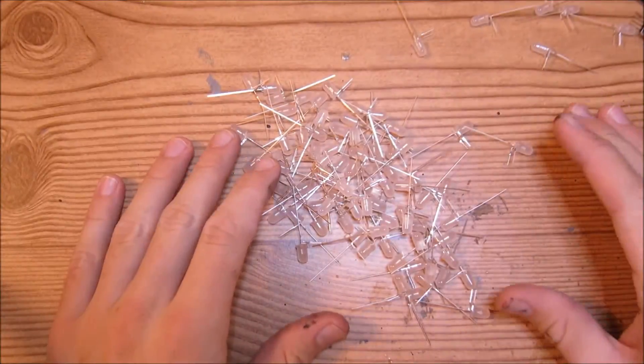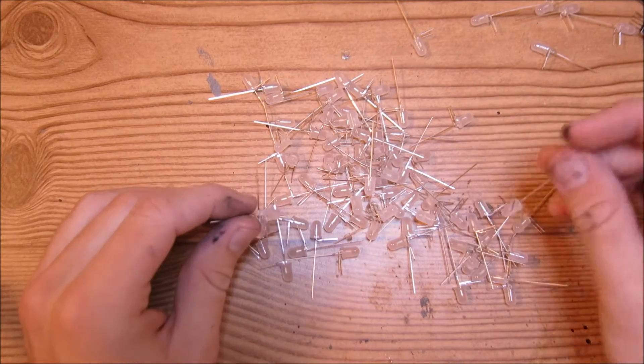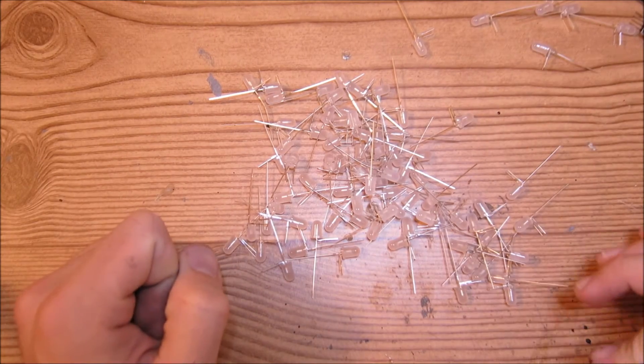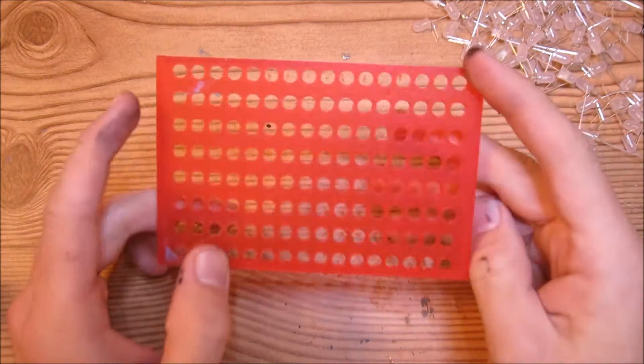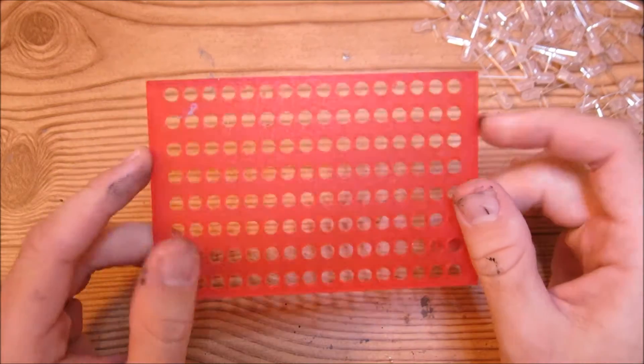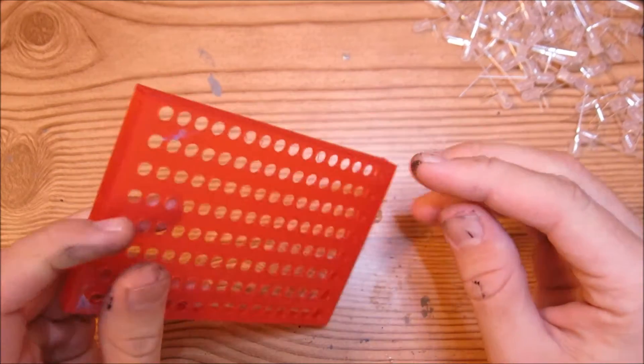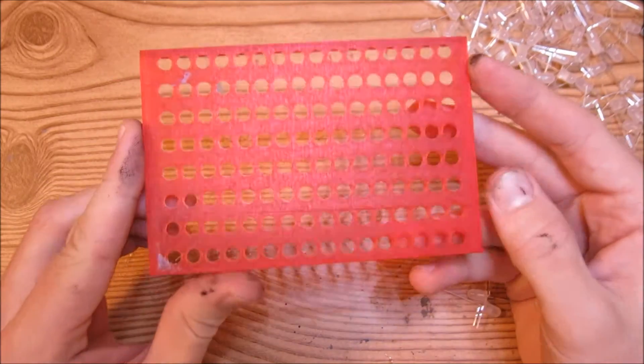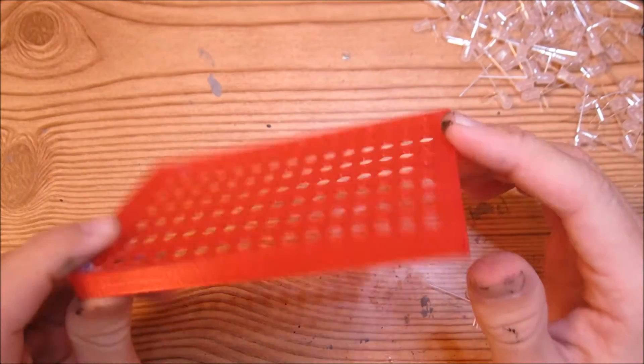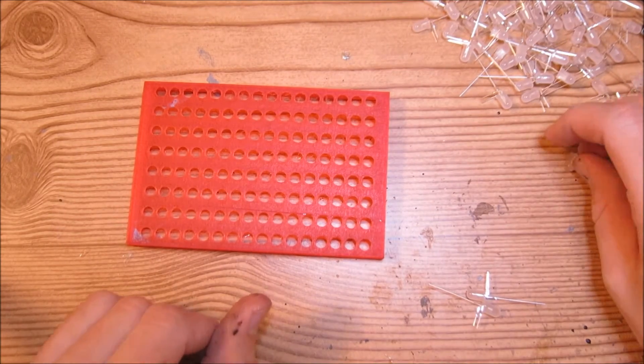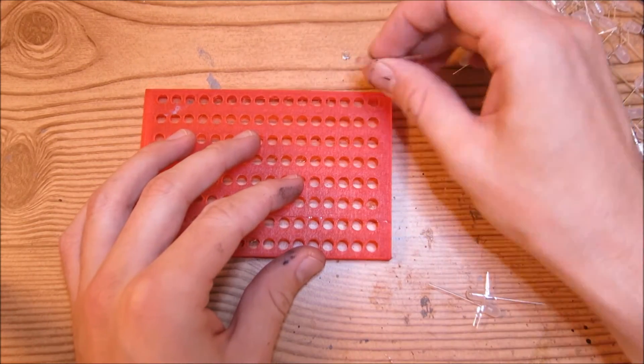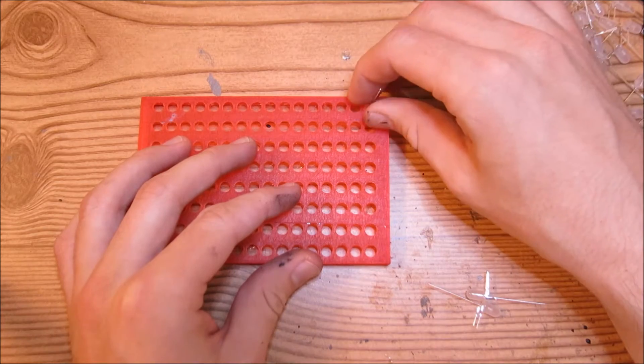Now that we have all our LEDs bent and trimmed, we're going to start assembling them into subsections. For this part, you'll need your little template here. Yours might be a slightly different color or a completely different color, but in any case, you'll need your template. Basically, we're just going to populate rows of eight with the LEDs.